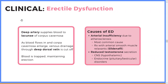Erection works like this: the deep artery supplies the lacunae of the corpus cavernosum; blood builds up and pressure occludes the dorsal vein, so no blood leaves. If there's arterial insufficiency, this fails. Erectile dysfunction is often one of the first signs of vascular pathology. Treatment includes sildenafil, a smooth muscle relaxant that causes vasodilation — but never combine it with nitrates as it can cause dangerous arterial dilation. Central causes from the CNS and endocrine system can also cause ED.